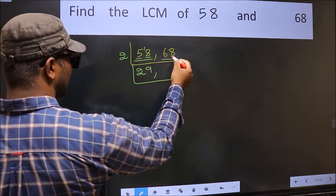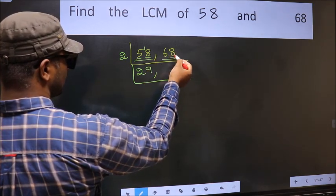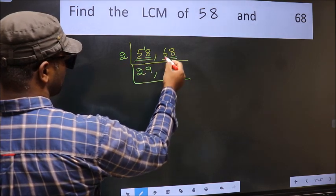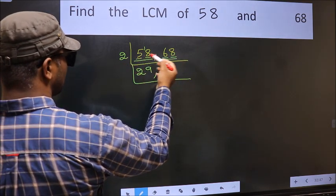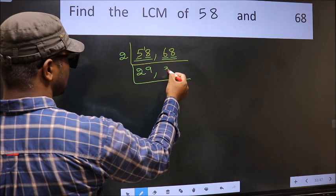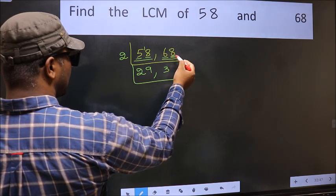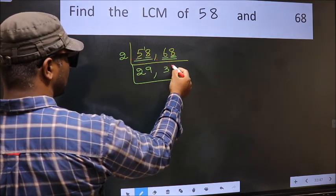The other number, 68. Last digit 8, even. So this is divisible by 2. First number, 6. When do we get 6 in 2 table? 2, 3 is 6. The other number, 8. When do we get 8 in 2 table? 2, 4 is 8.